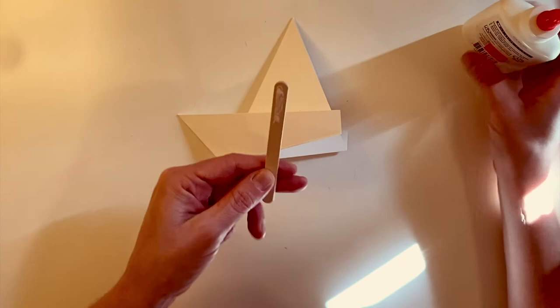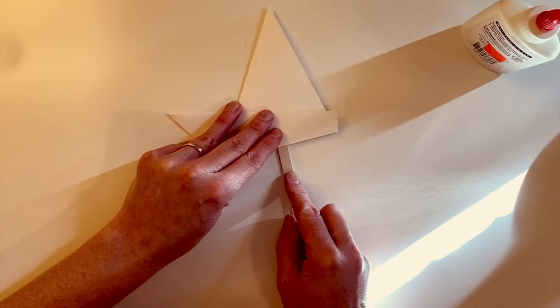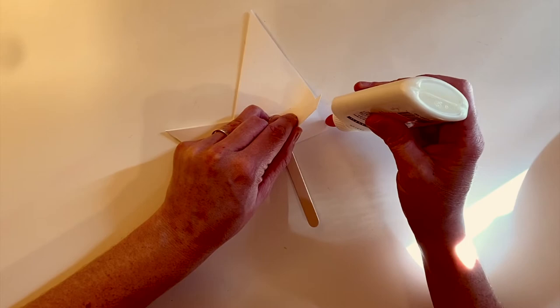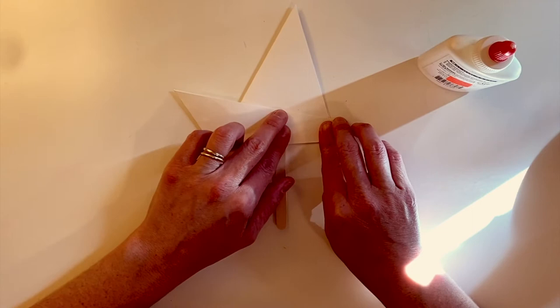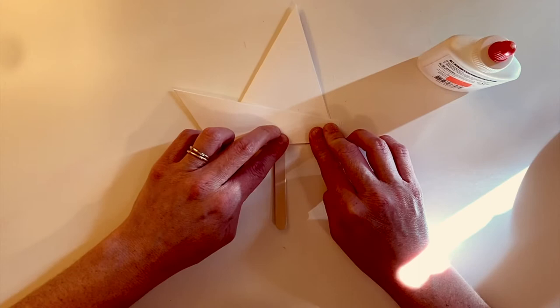Then you can put it in between the folds of your sailboat. You can also apply a little bit at the end of your boat as well. Now you can either press down on this until it's dry or you can place a heavy book on top, and that will keep it in the right position until it dries.